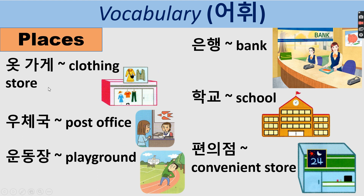Clothing store is 옷가게. Post office is 우체국. Playground is 운동장. Bank is 은행. School is 학교 — same principle as 약국. Convenience store is 편의점. Let's pronounce: 공원, 공항, 마트, 백화점, 병원, 약국, 옷가게, 우체국, 운동장, 은행, 학교, 편의점.